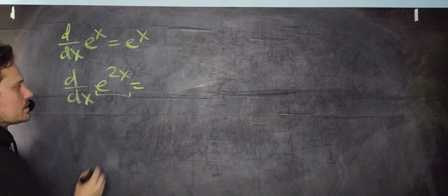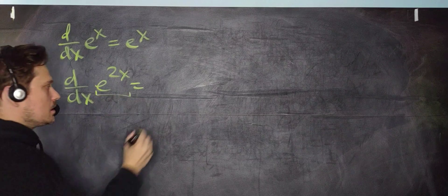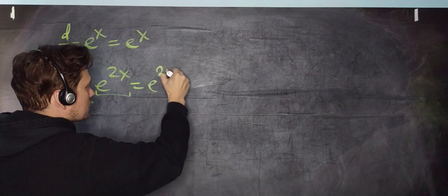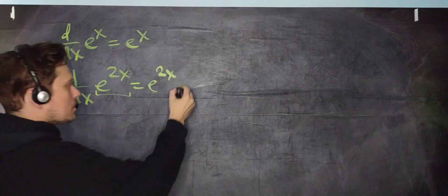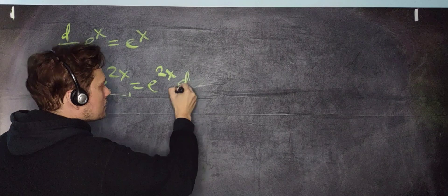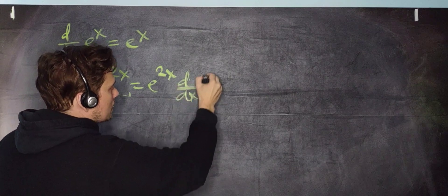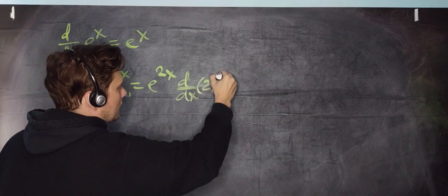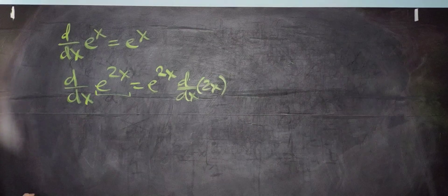So e to the 2x. But then, because 2x is a function, you have to multiply by the derivative, with respect to x, of the 2x.